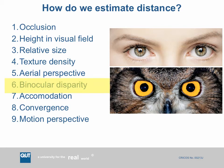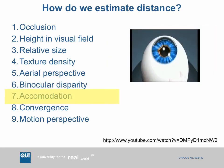Another cue is convergence. When you are focusing on something close, your eyes point inward, and for something further away your eyes point outward. So not only is each individual eye adjusting its focus, but the angles that your eyes are gazing in give you some indication of how far away things are. These are high-performance muscles in your eyes, and you get feedback from those into your brain — yet another cue on distance.